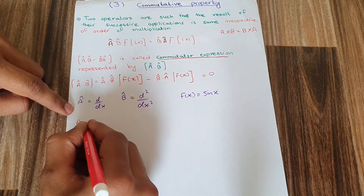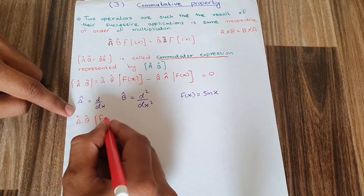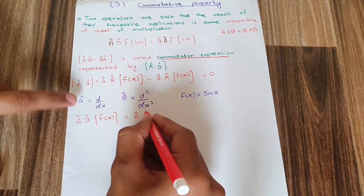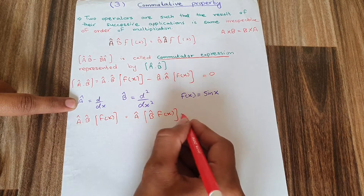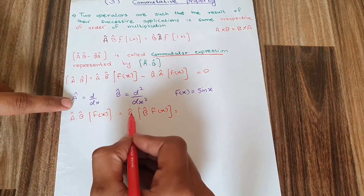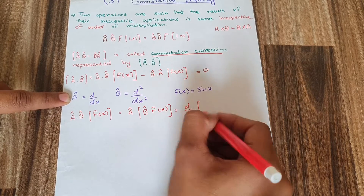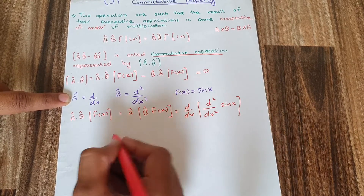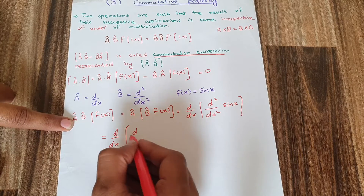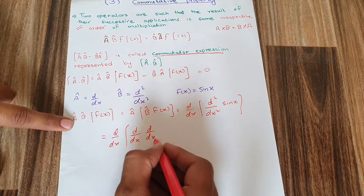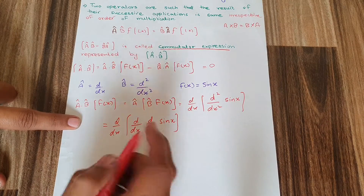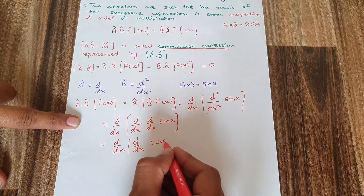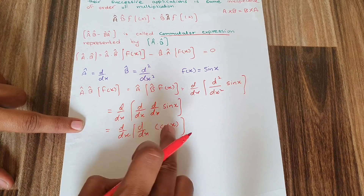For A·B·f(x), I first apply B and then apply A. Plugging in the values: A is d/dx, B is d²/dx², and f(x) is sin(x). Opening the derivatives, I can write it as d/dx · d/dx · sin(x). Taking the derivative of sin(x) gives cos(x). Now I take the derivative of cos(x), which is minus sin(x).